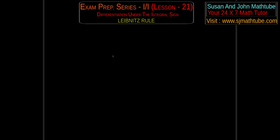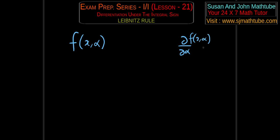First, I will write the condition. We have a function in x and alpha, where x is the variable and alpha is the parameter — basically a constant. The only condition is that the partial derivative with respect to the parameter should exist. The partial derivative — the curly D — should exist and be continuous.